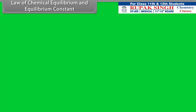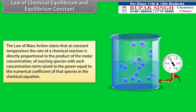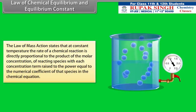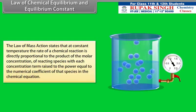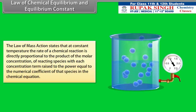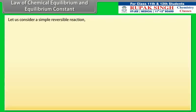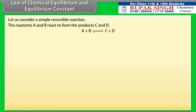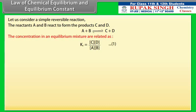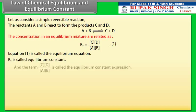Law of Chemical Equilibrium and Equilibrium Constant: The law of mass action states that at constant temperature, the rate of a chemical reaction is directly proportional to the product of the molar concentrations of reacting species, with each concentration term raised to the power equal to the numerical coefficient of that species in the chemical equation. For a simple reversible reaction where reactants A and B form products C and D, the equilibrium constant Kc is defined by the equilibrium constant expression relating concentrations at equilibrium.